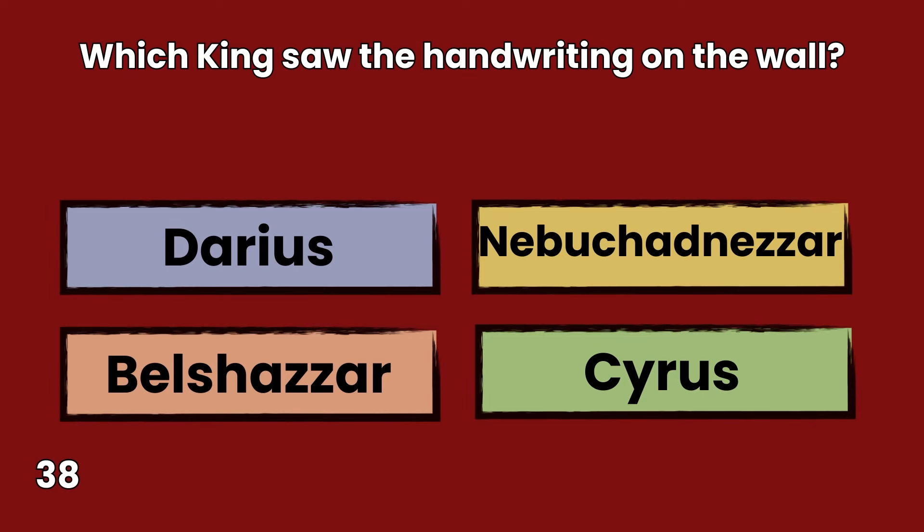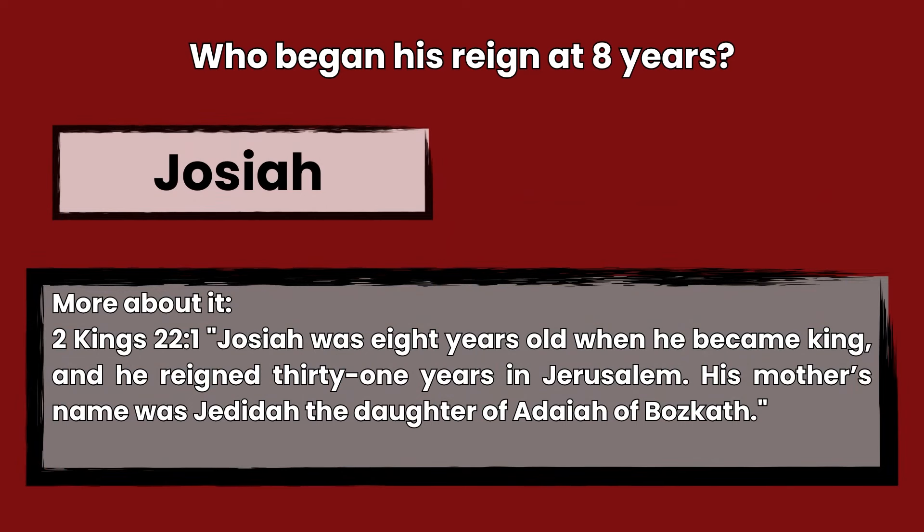Question 39: Who began his reign at eight years? Joash, Manasseh, Hezekiah, or Josiah? Answer: Josiah. 2 Kings 22:1 — Josiah was eight years old when he became king, and he reigned 31 years in Jerusalem. His mother's name was Jedidiah, the daughter of Ediah of Bozkath.